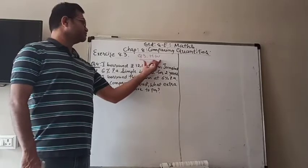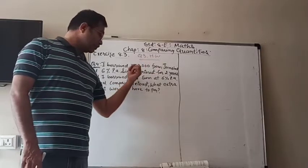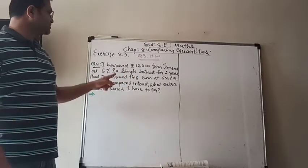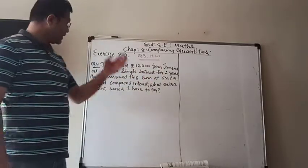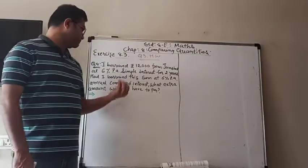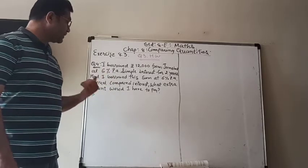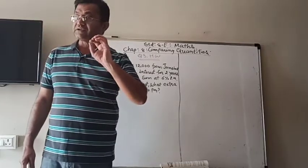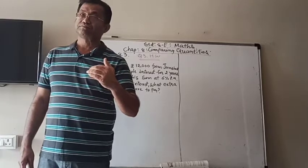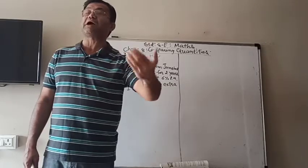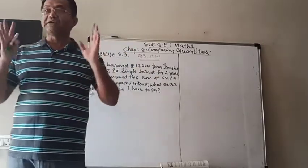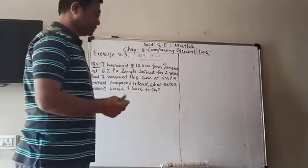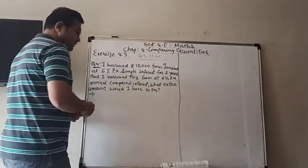Question number 3, you will do for homework. Now, question number 4: I borrowed Rs. 12,000 from Jamshed at 6% per annum simple interest for 2 years. Had I borrowed this sum at 6% per annum compounded annually, what extra amount would I have to pay? We need to find the simple interest, compound interest, and the difference between them.